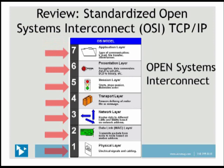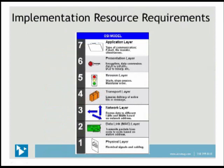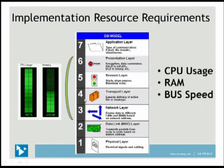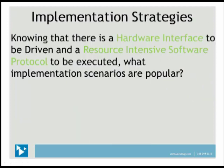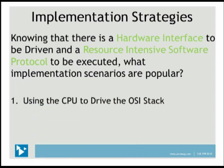This is a pretty intensive body of software and logic that needs to be executed. The implementation resource requirements are really heavy from layers three through six — a tremendous amount of CPU usage is consumed, along with a lot of RAM and bus speed. In order to implement the full TCP/IP OSI stack there's a hardware interface and a resource-intensive software protocol to execute. The first implementation option is to use a CPU to drive the OSI stack — everybody has a CPU, so you take some memory and drive the stack, though that's a lot of software to execute.